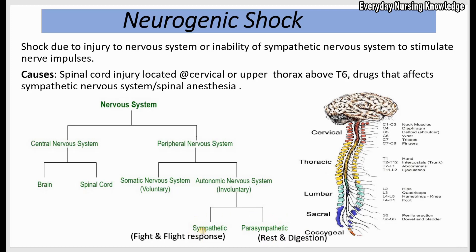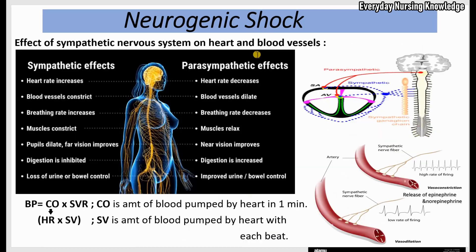What causes damage to the sympathetic nervous system? A spinal cord injury, especially above T6, because sympathetic innervation of the heart arises from T1 to T5. Certain drugs that affect the sympathetic nervous system, or spinal anesthesia, can all lead to neurogenic shock.